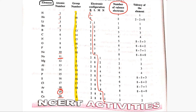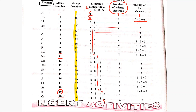Now, valency. If valence electrons are 1, valency is 1; 2 electrons gives valency 2; 3 gives 3; 4 gives 4. If valence electrons are 5, valency becomes 8 minus 5, that is 3. For 6 valence electrons, valency is 2. For 7, valency is 8 minus 7, which is 1. For 8 valence electrons, valency is 0.